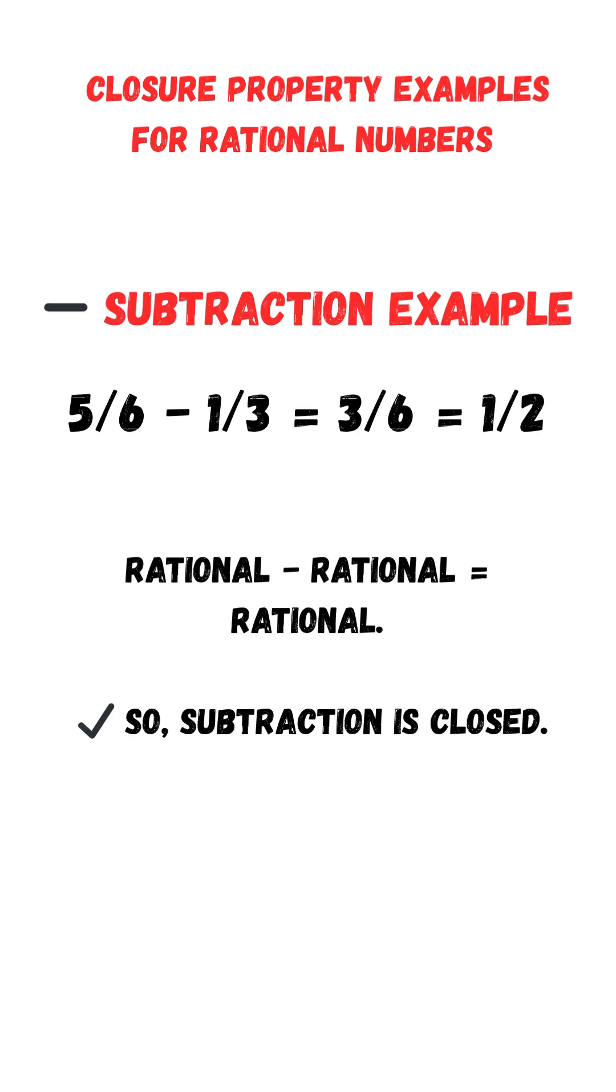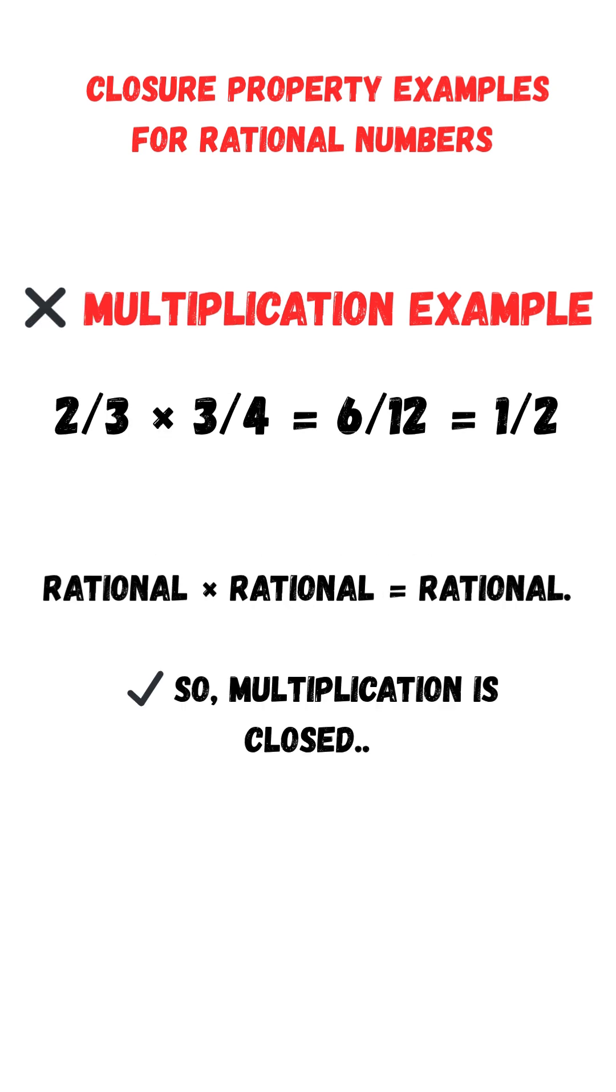Subtraction example: 5 sixths minus 1 third equals 3 sixths, equals 1 half. Still a rational number. So, rational numbers are closed under subtraction.